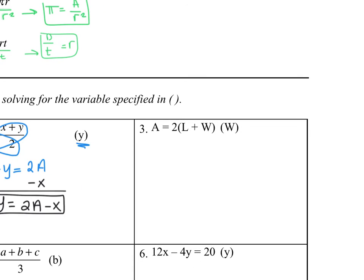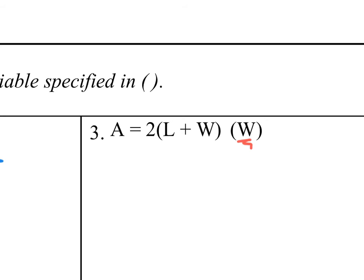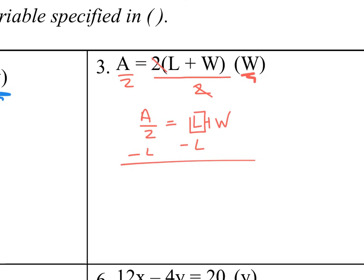In number 3, I have A equals 2 times l plus W, and I want to solve for W. I'm going to show you a trick. You actually don't have to distribute your 2. You can do reverse distribution, which is simply dividing both sides of your expression by a 2. So I'm going to divide by 2, divide by 2. My 2s cancel. So I get A over 2 equals l plus W. What I now want to do is solve for W. So the only way to get rid of this l is to subtract it. So I'm going to subtract l, subtract l, and I get W equals A over 2 minus l. And that's your final answer.